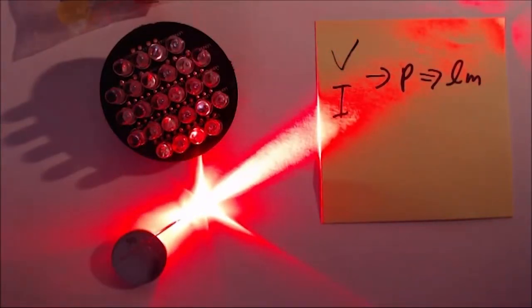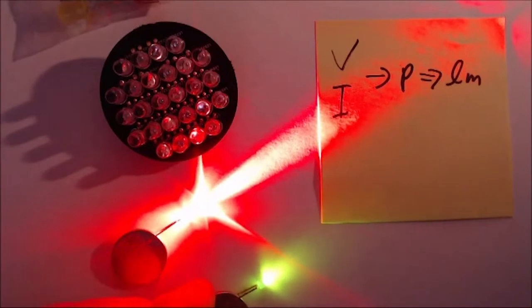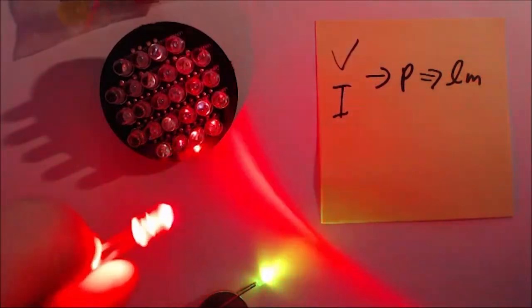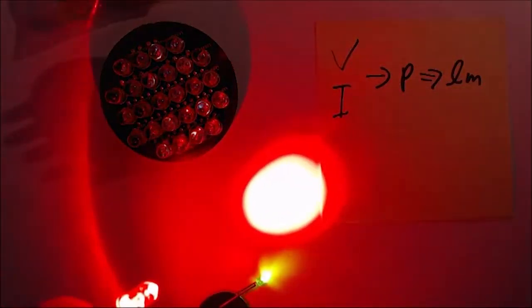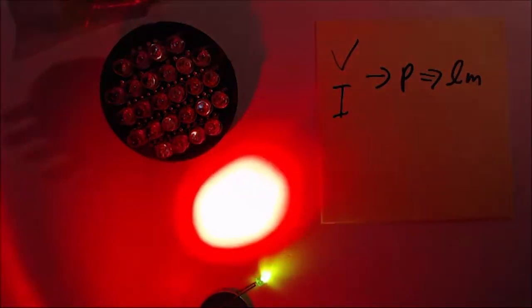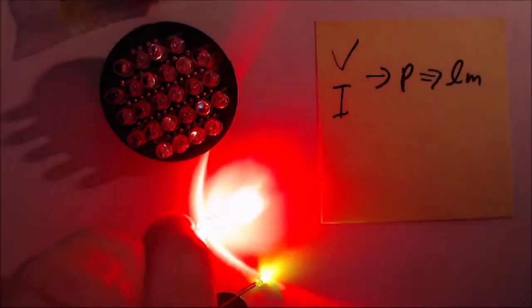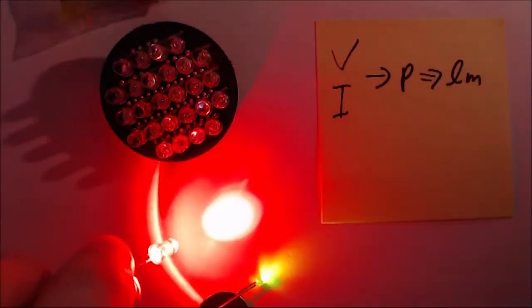And then we can pick another one. And we can see it's not as bright, but it's also a wider angle. And if I shine it the other way, you can see it produces quite a hotspot from a distance. And as they get closer, they get smaller.